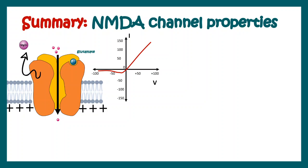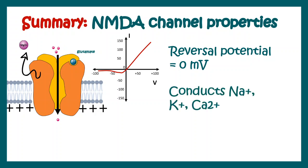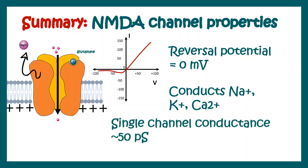To summarize the channel properties: the reversal potential of the NMDA receptor is zero millivolts. It conducts sodium, potassium, and also calcium. The single channel conductance is 50 picosiemens. It has sustained current properties — that means it conducts for a long time compared to other ionotropic receptors. Even after the end of a particular stimulus, the channel remains conductive.